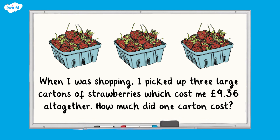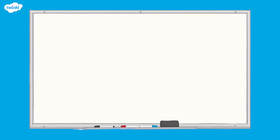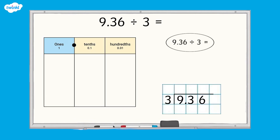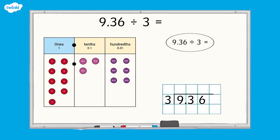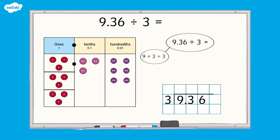Let's write down our division calculation: 9.36 divided by 3. This time we will also use the short division method alongside the place value chart and part-whole model. We put the dividend 9.36 here and the divisor 3 here. If we divide the nine ones into three equal groups in the place value chart, we can see that there are three ones in each group, so 9 divided by 3 equals 3.